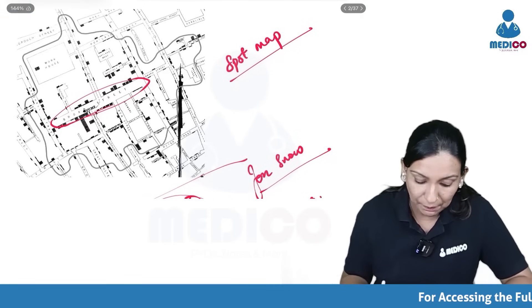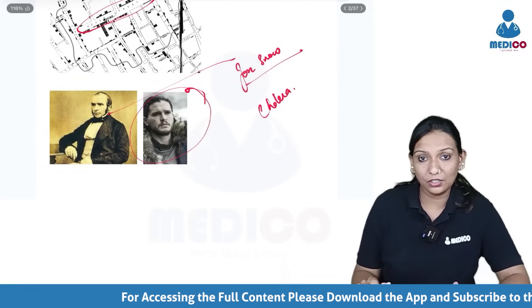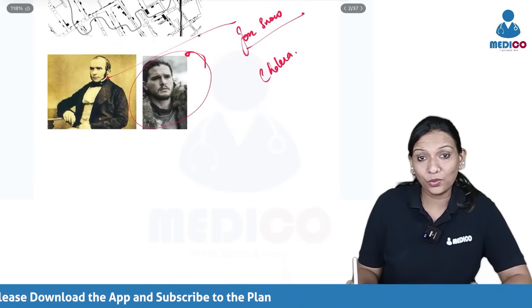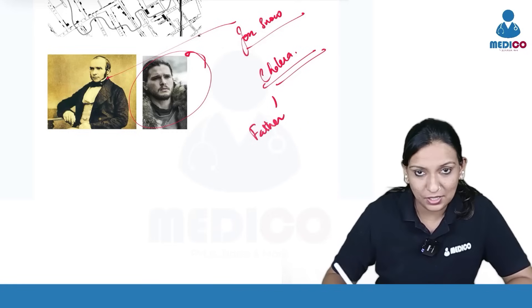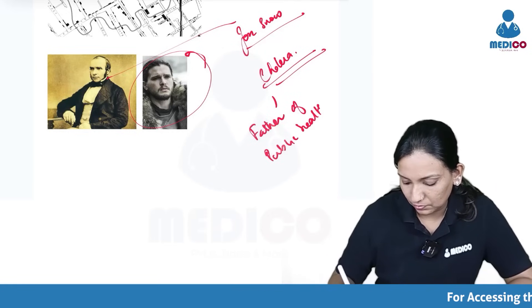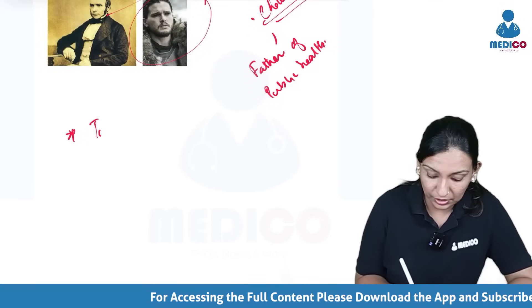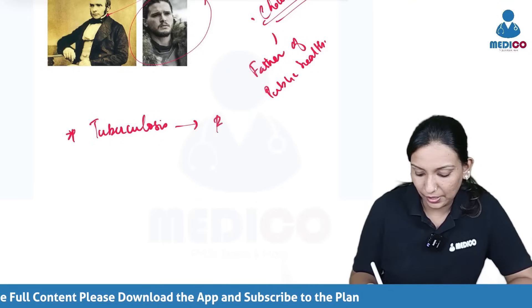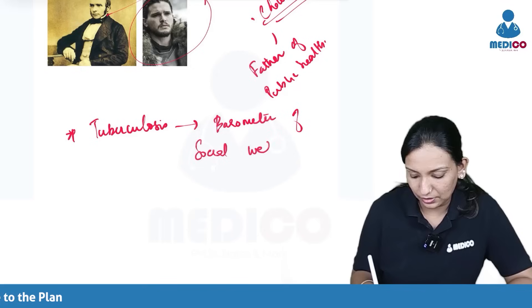So a spot map can be asked as an image based question. And you should be able to identify Jon Snow who is known as the father of epidemiology. And what is the father of public health? That is cholera. Father of public health is not a person, but it's a disease which is cholera. Tuberculosis is known as the barometer of social welfare.